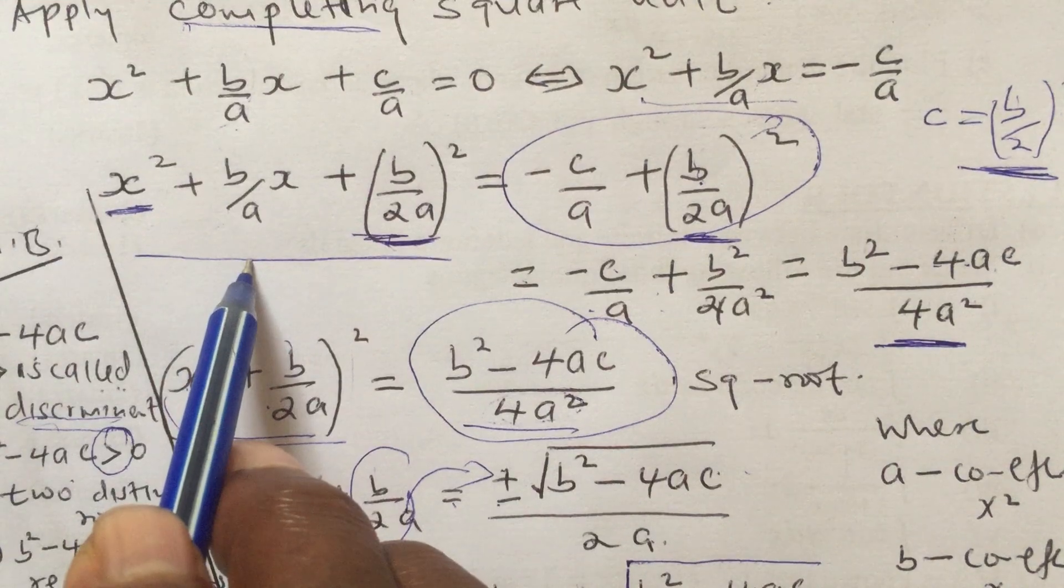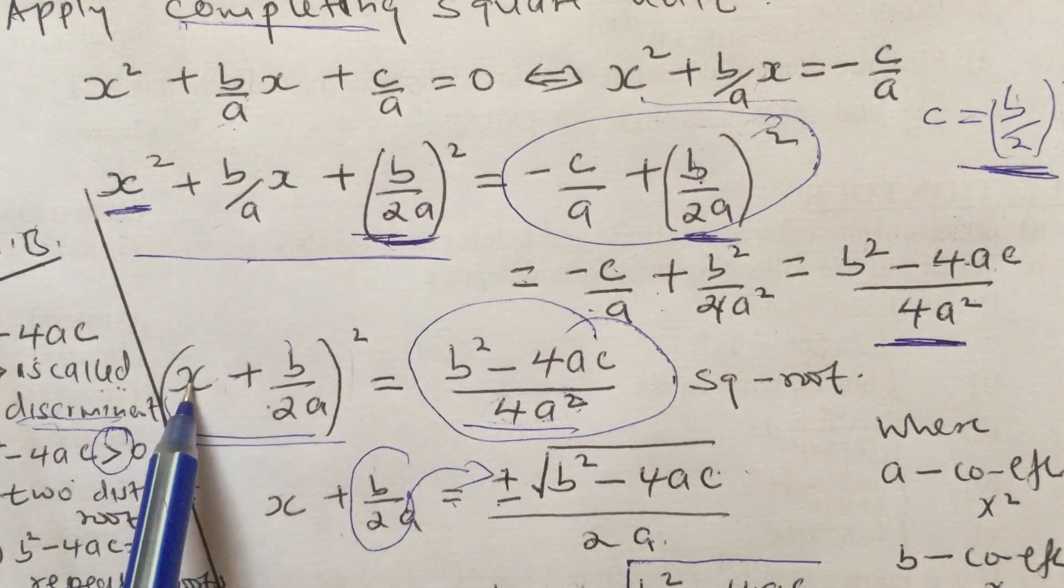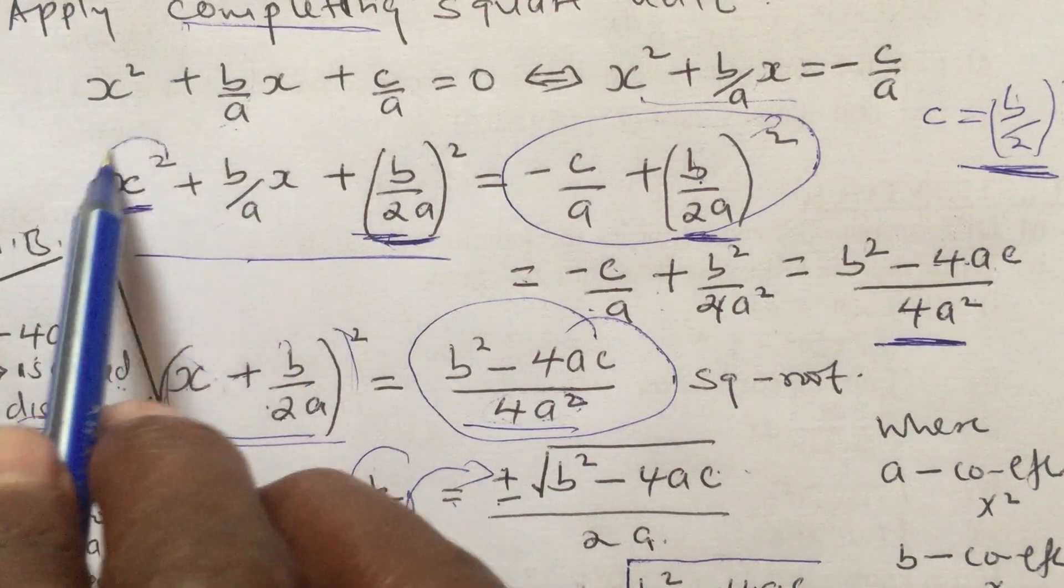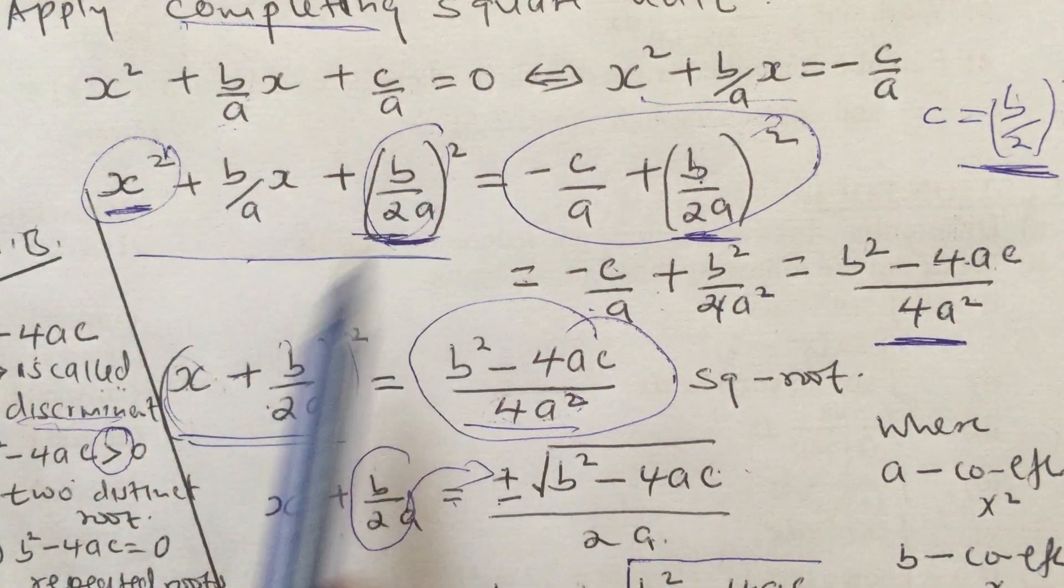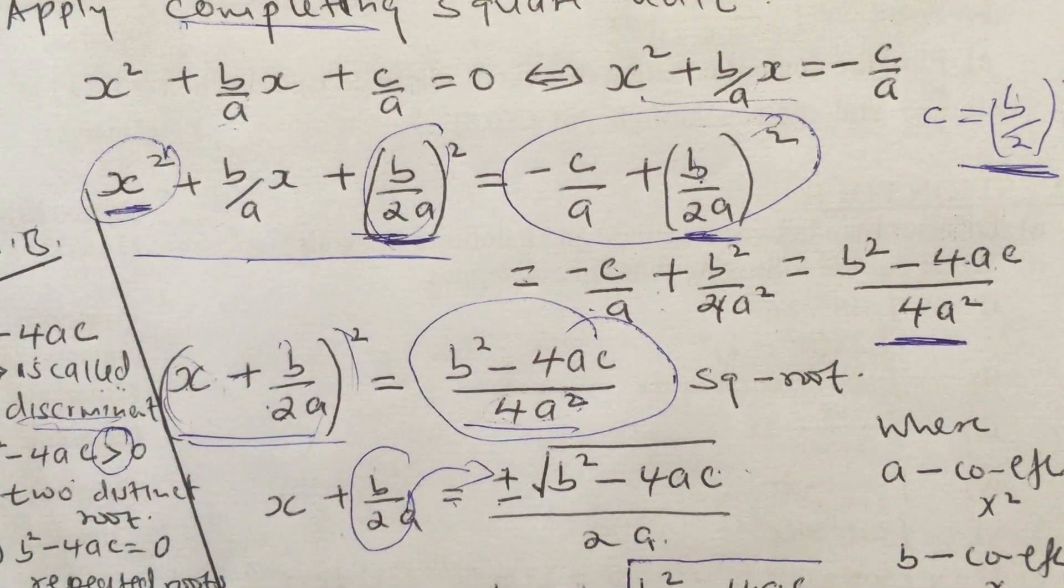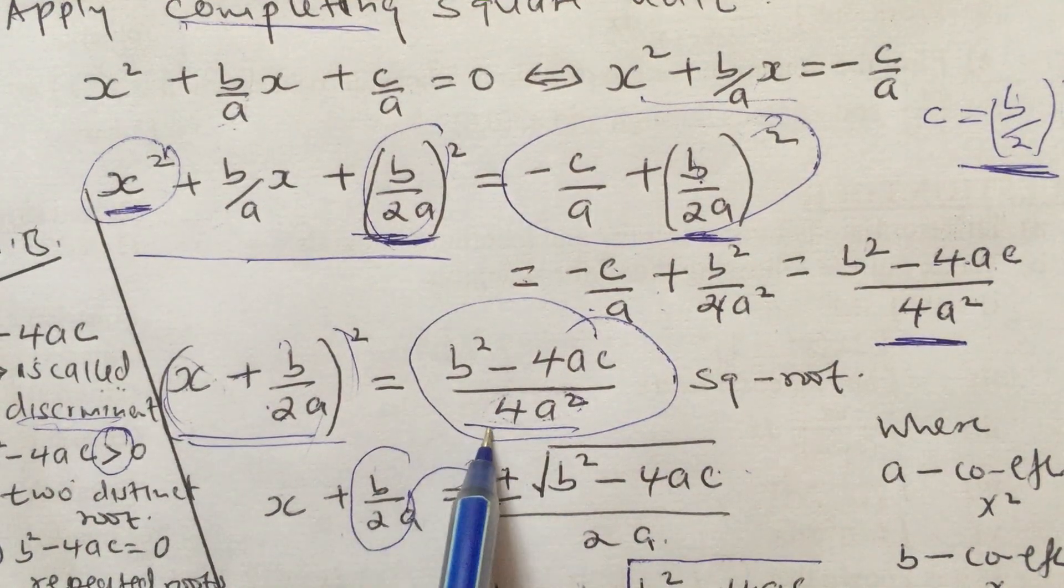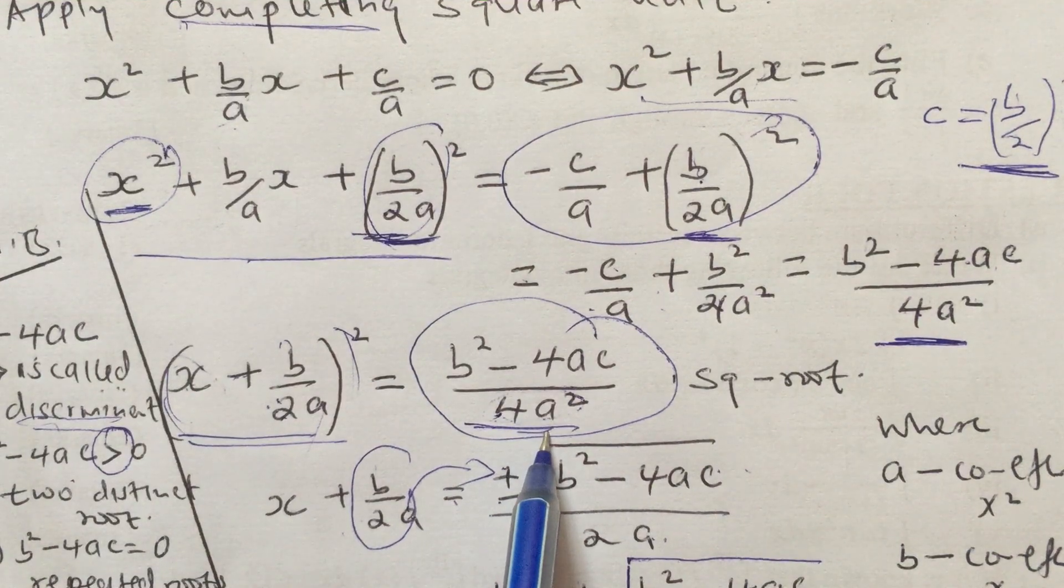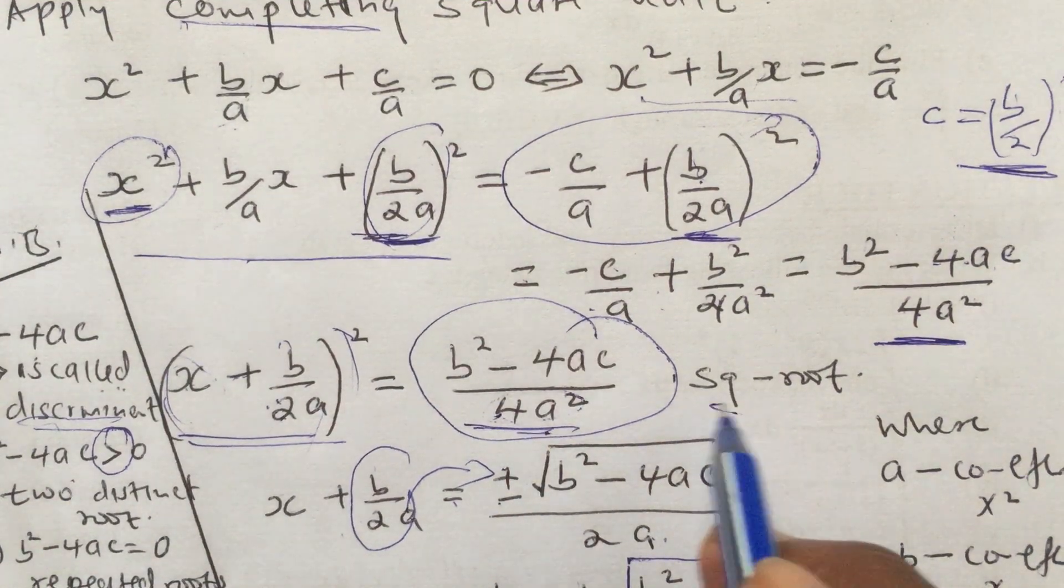Now once we are at that point, we can actually factorize the left-hand side, where we get it as (x + b/2a)². We only take what is under square and merge together, retaining the square.